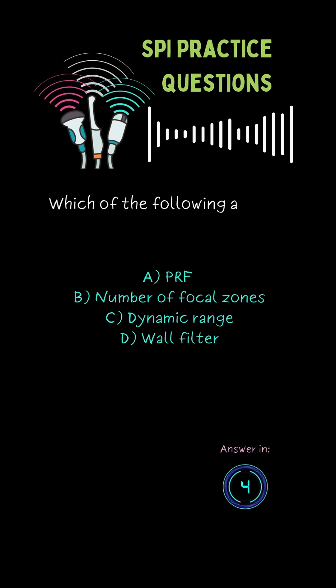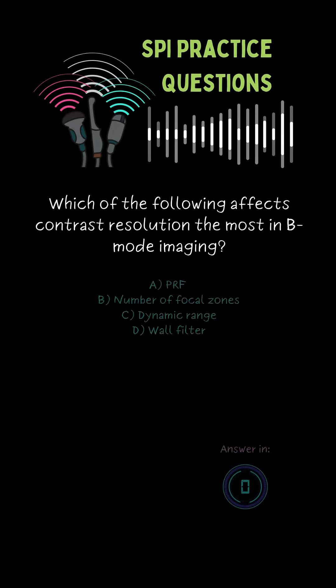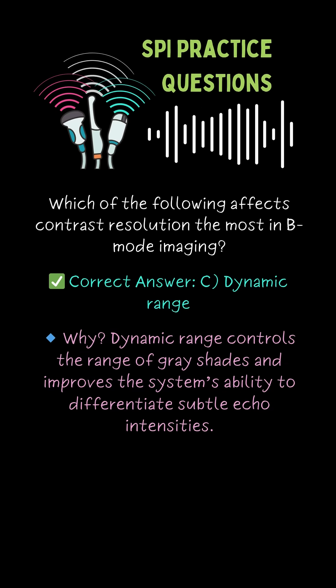Which of the following affects contrast resolution the most in B-mode imaging? C. Dynamic range.